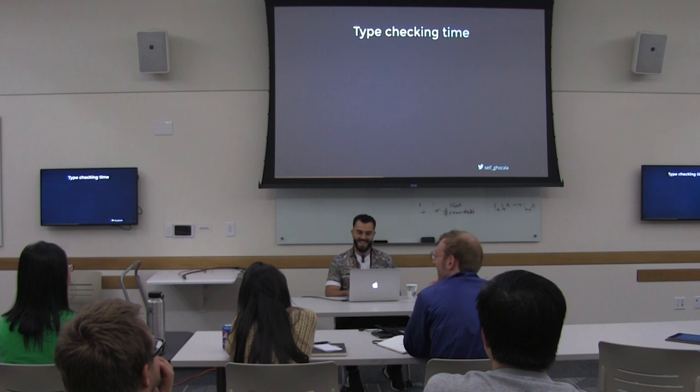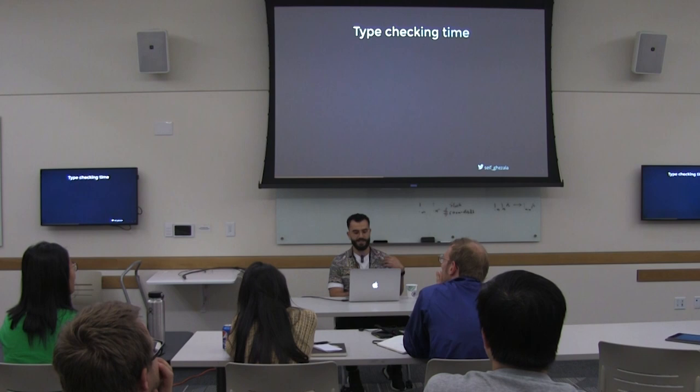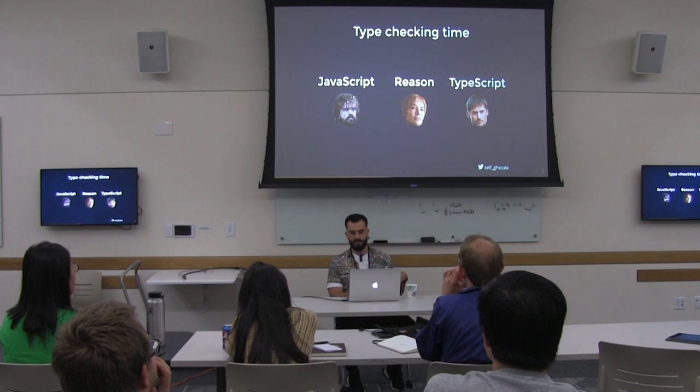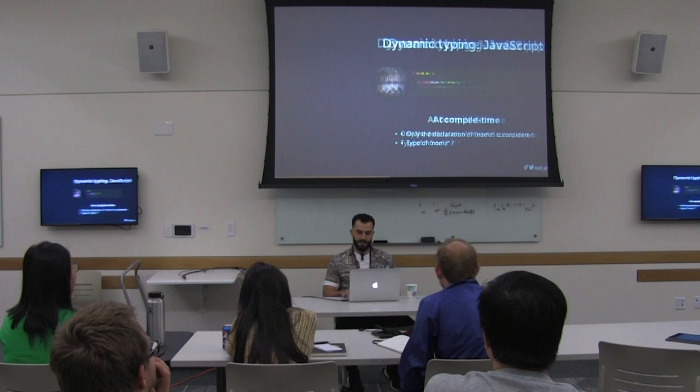If you watch Game of Thrones, one way of thinking about JavaScript and ReasonML is like the Lannister siblings. The way I see it is: JavaScript is the nicest of them — Tyrion. Reason is like Cersei, super mean. And then you have TypeScript, which is somewhere in between. We'll see why.